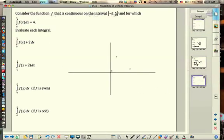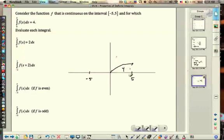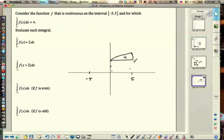So consider the function f that is continuous on the interval negative 5 to 5. We'll say this is negative 5 and this is 5. The area from 0 to 5 is 4. So let's maybe make a picture, just like we had before, something like that. So this is 4. Okay, so if I shift the whole graph up 2, 1, 2, like this. I have this area which is 4, and then I have a rectangle underneath. So this rectangle has a height of 2 and a width of 5, so that's 10. So we should have 4 plus 10 which is 14.